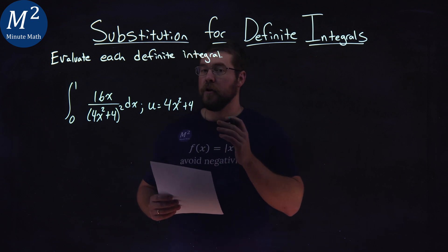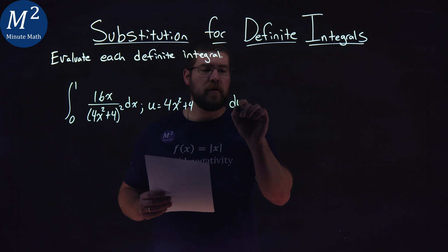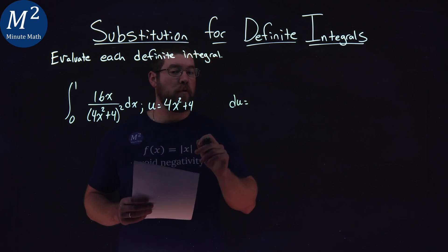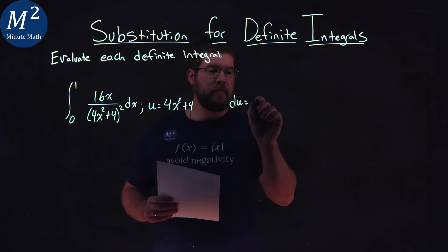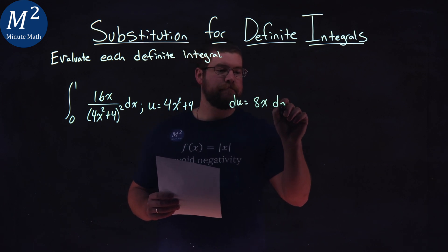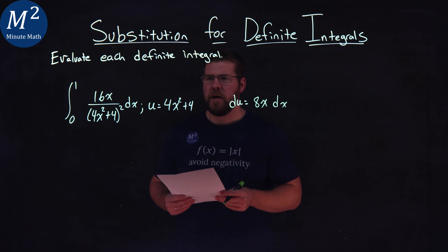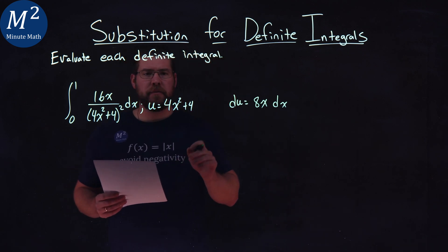Well, we're already given a u value, so let's find my du value, the derivative here. Derivative of 4x squared plus 4: 2 comes down to be multiplied by 4 is 8, so we have 8x and then dx. We have our u and du.